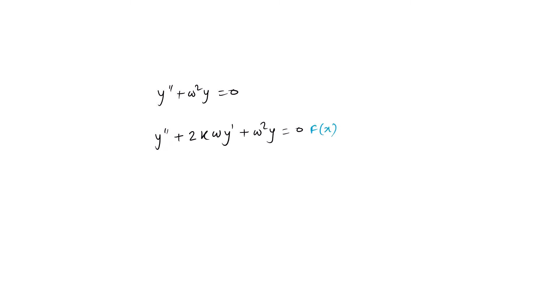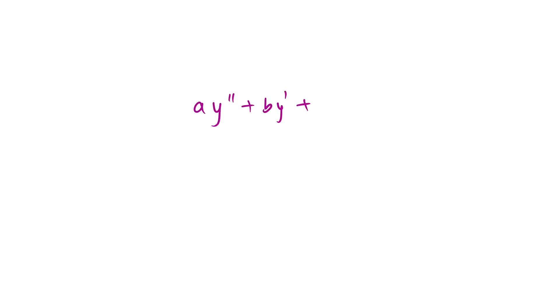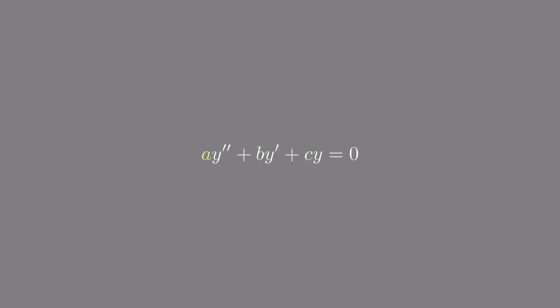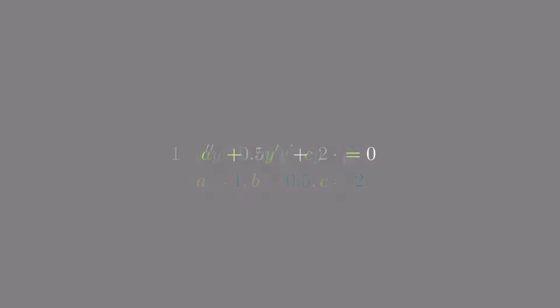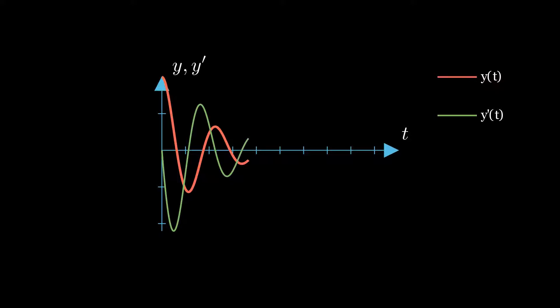Now let us move into Python and see how we can solve an example ODE. For our example we will look at the equation a·y'' + b·y' + c·y = 0, with constants a = 1, b = 0.5, and c = 2. After solving and plotting the result, the graph will show y and y' over the solution range.